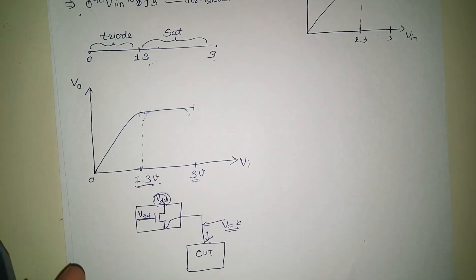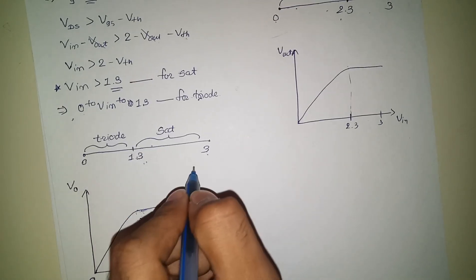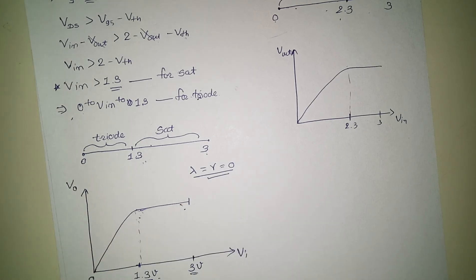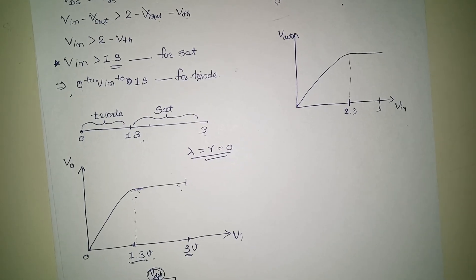One catch is lambda and gamma is 0 we are assuming here - no body effect, no channel length modulation. Okay, all right, thanks.